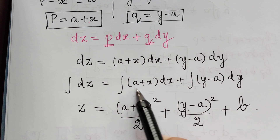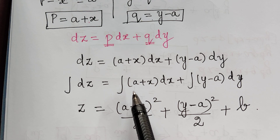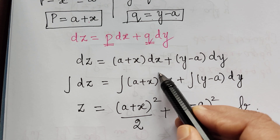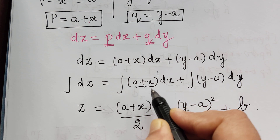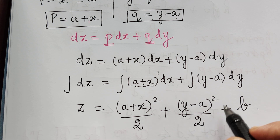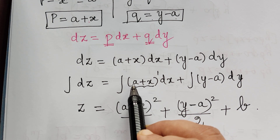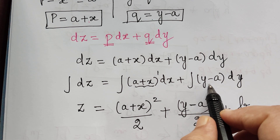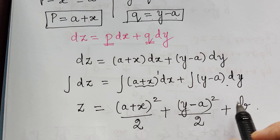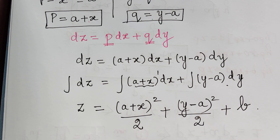This integration uses the formula ∫xⁿ dx = x^(n+1)/(n+1), where n = 1. Since a is a constant, we treat (a + x) as one term and integrate accordingly. Alternatively, we can integrate separately to get ax + x²/2 + y²/2 minus ay plus the constant b. Both methods are acceptable, and this gives us the complete integral.